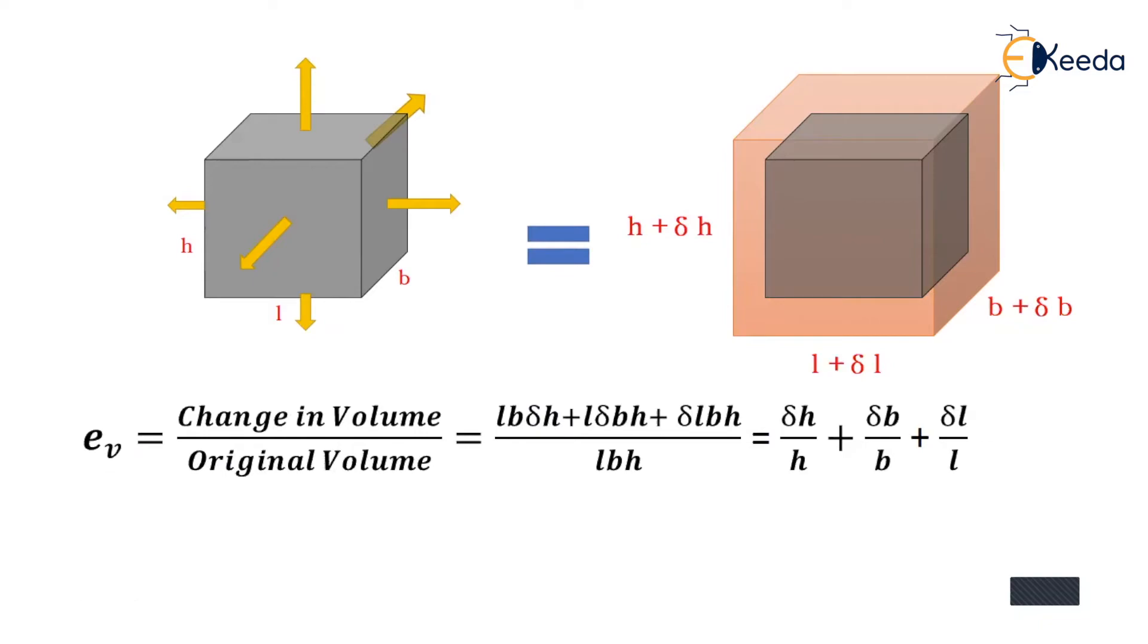Then l into delta b into h, this will be change in volume along breadth, and then delta l into b into h, this will be change in volume along length. The original volume will be l into b into h. Simplifying this we can get delta h upon h, delta b upon b and delta l upon l.